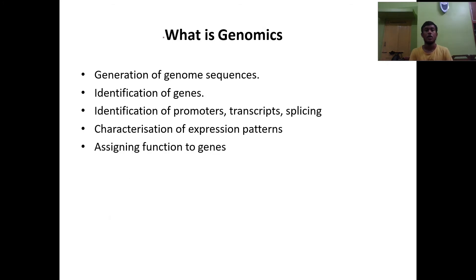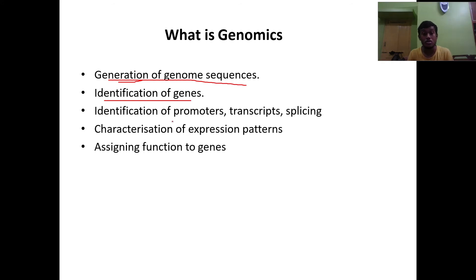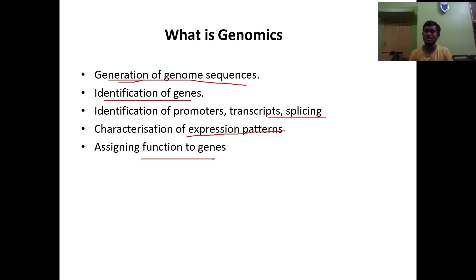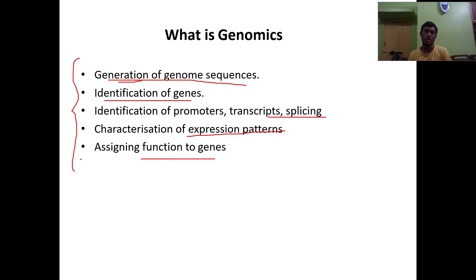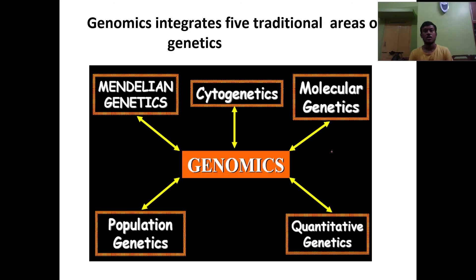In simple terms, genomics involves: generation of genome sequences, identification of genes, identification of promoters and transcripts, characterization of splicing and expression patterns, and assigning functions to genes. So why do we need genomics? It's essentially the identification of different parts of a gene and assigning functions to those particular genes.